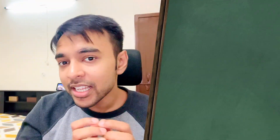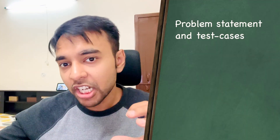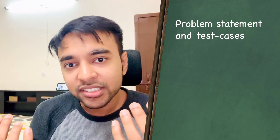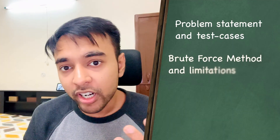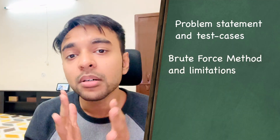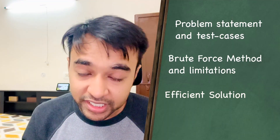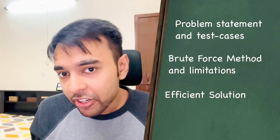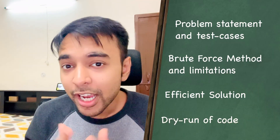Hello friends, welcome back to my channel. First, I will explain the problem statement and we will see how to read the input, how to understand what is given, and how you can visualize it. Going forward, we will try to attack this problem in the most straightforward way we can think of, and then we're going to try to optimize it. After that, we will also do a dry run of the code so that you can understand and visualize how all of this is actually working in action. Without further ado, let's get started.